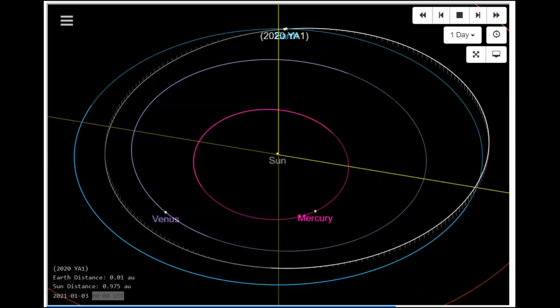The first asteroid, 2020 YA1, is about 52 feet in diameter. It'll pass by Earth at about 6 p.m. Central Daylight Time tomorrow. That will be about 930,000 miles above Earth, which is 0.01 AU. Again, tomorrow at 6 p.m., it's going to be about 52 feet in size across.